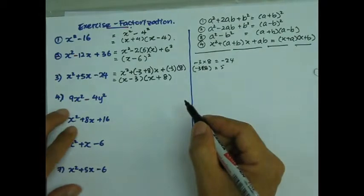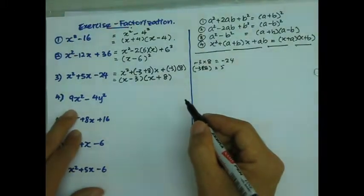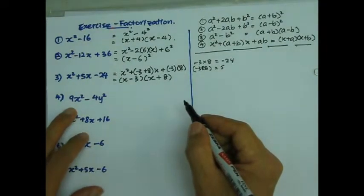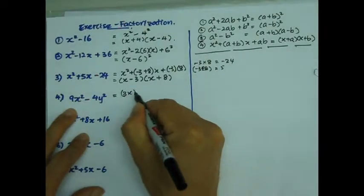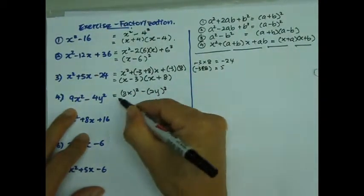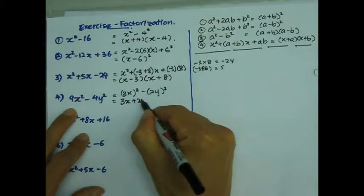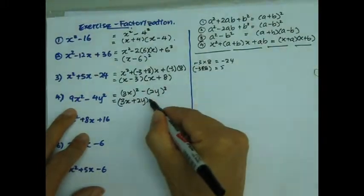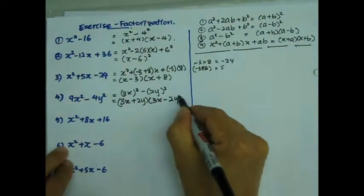That's problem number 1, 2, 3. Number 4, that's going to be easy. This is of the form a squared minus b squared. Just rewrite this as 3x everything squared minus 2y everything squared. So that's going to be 3x plus 2y bracket, and then open another bracket, 3x minus 2y. And I'm done.